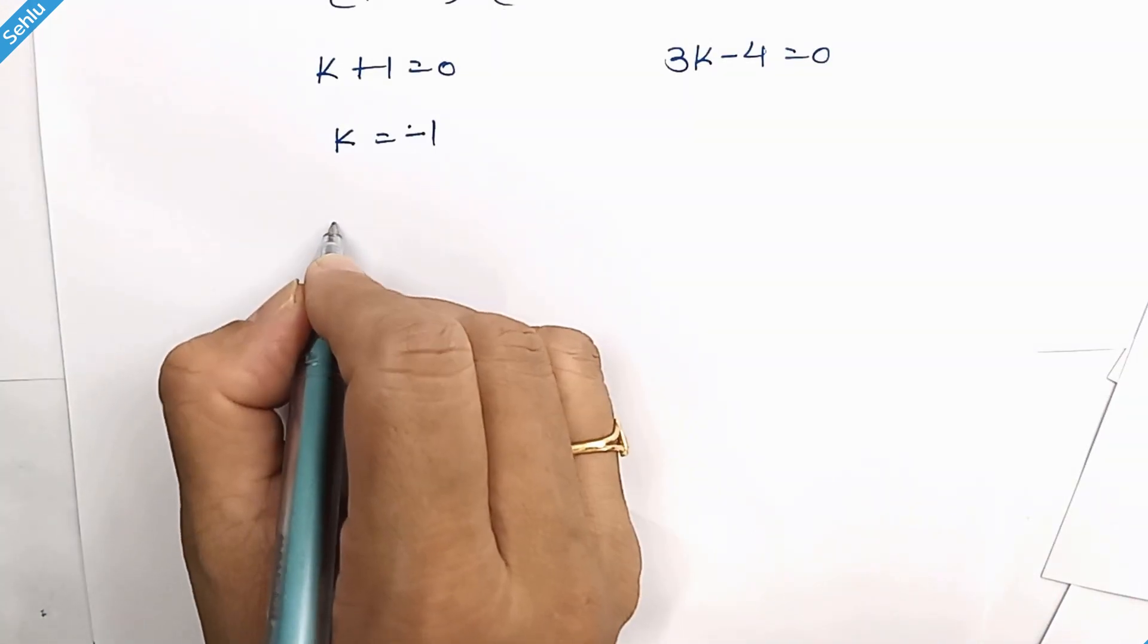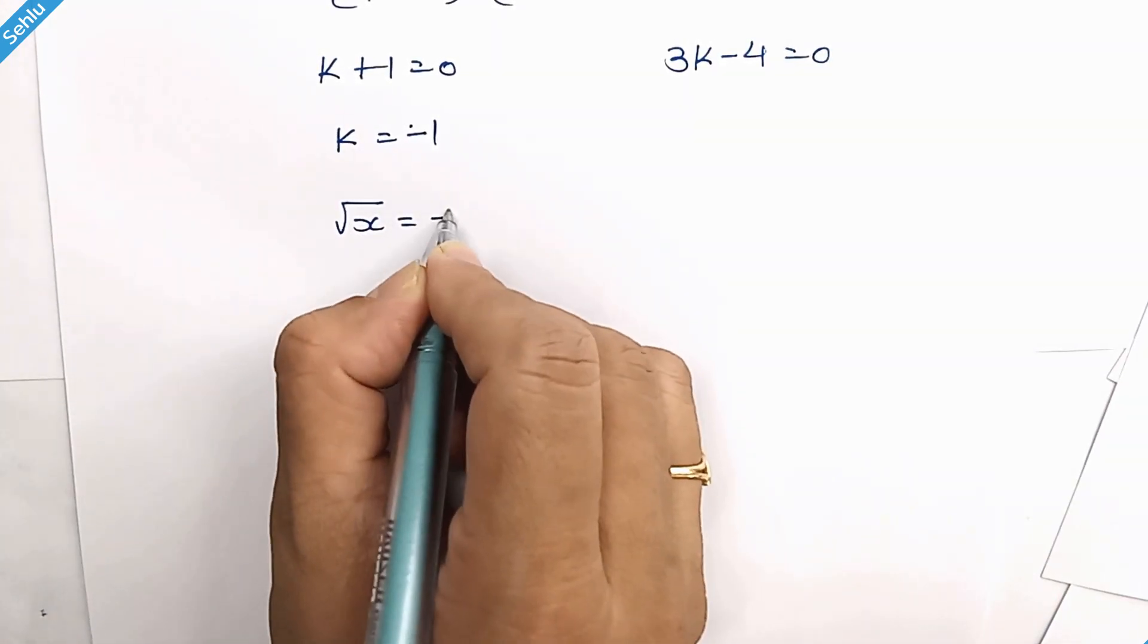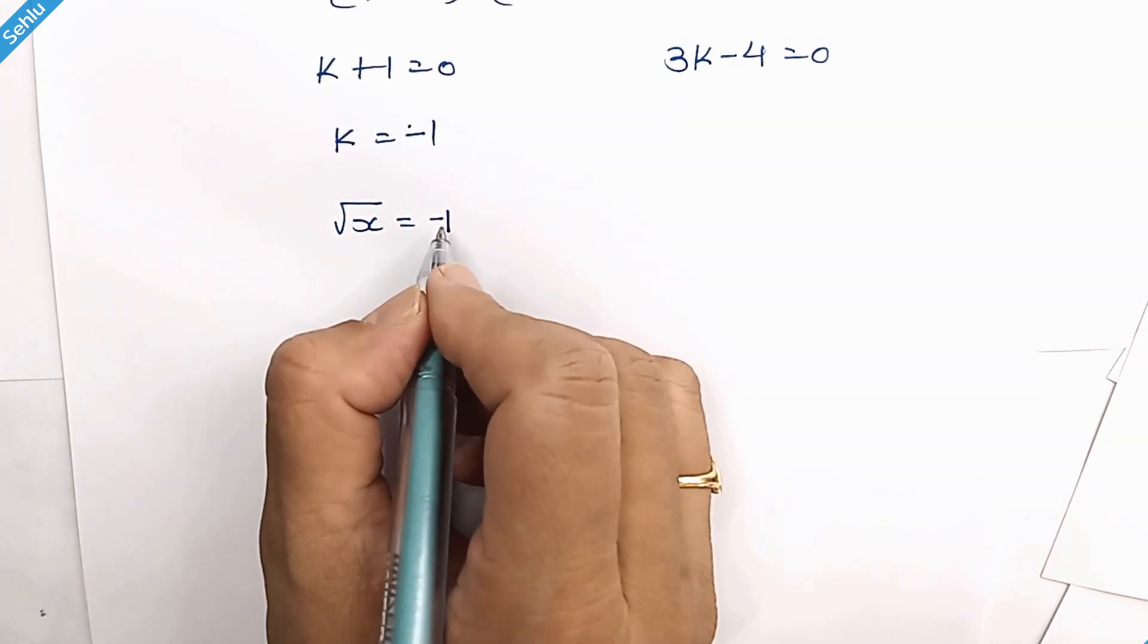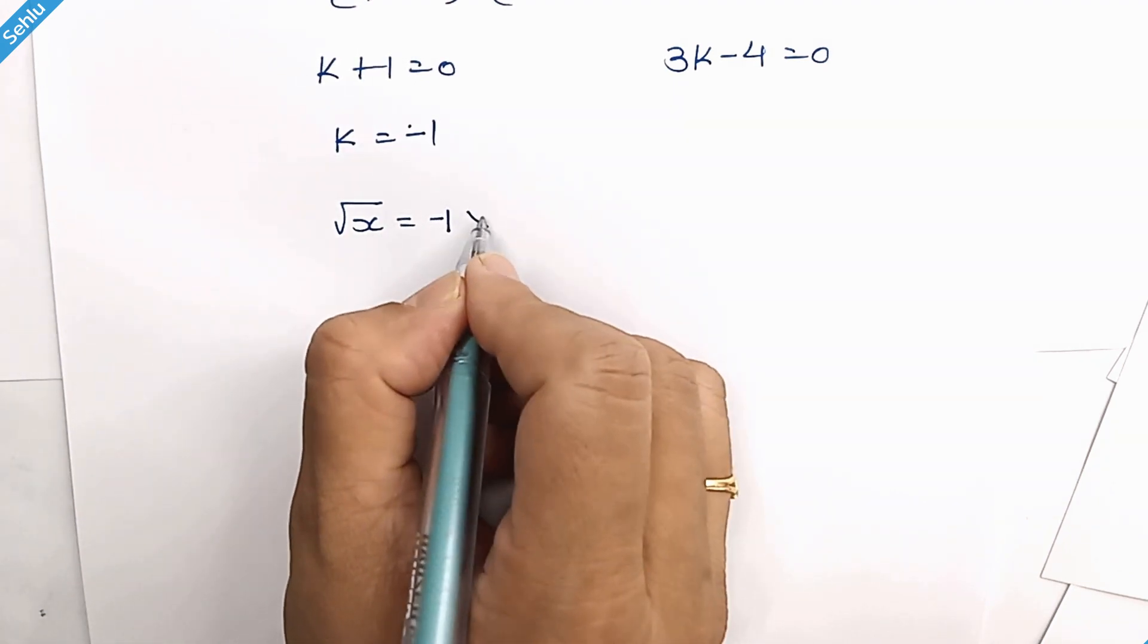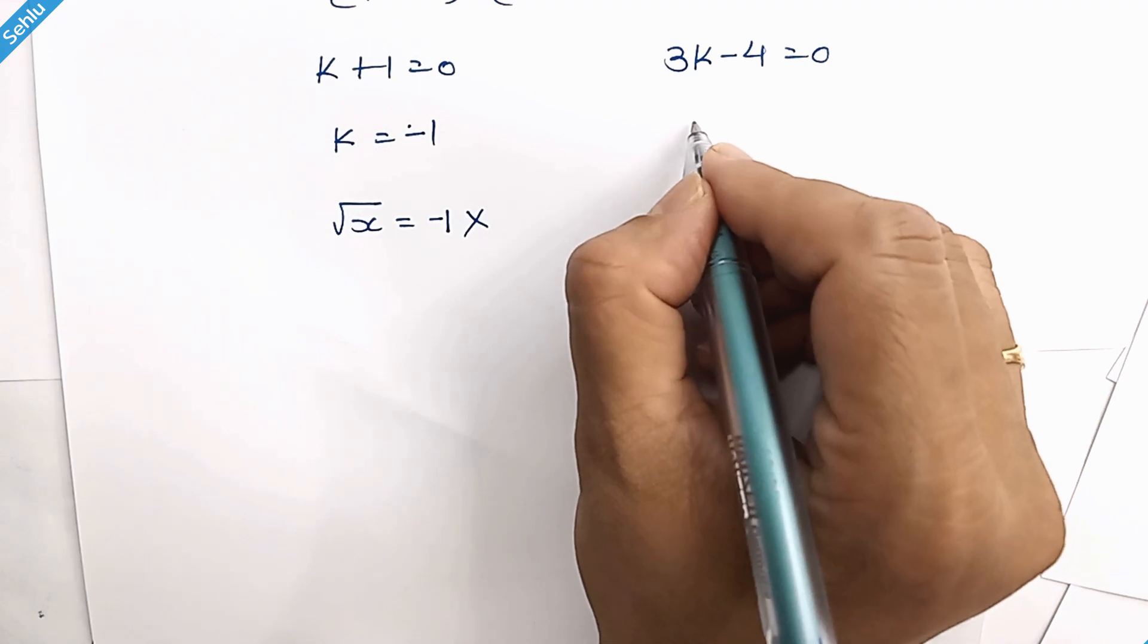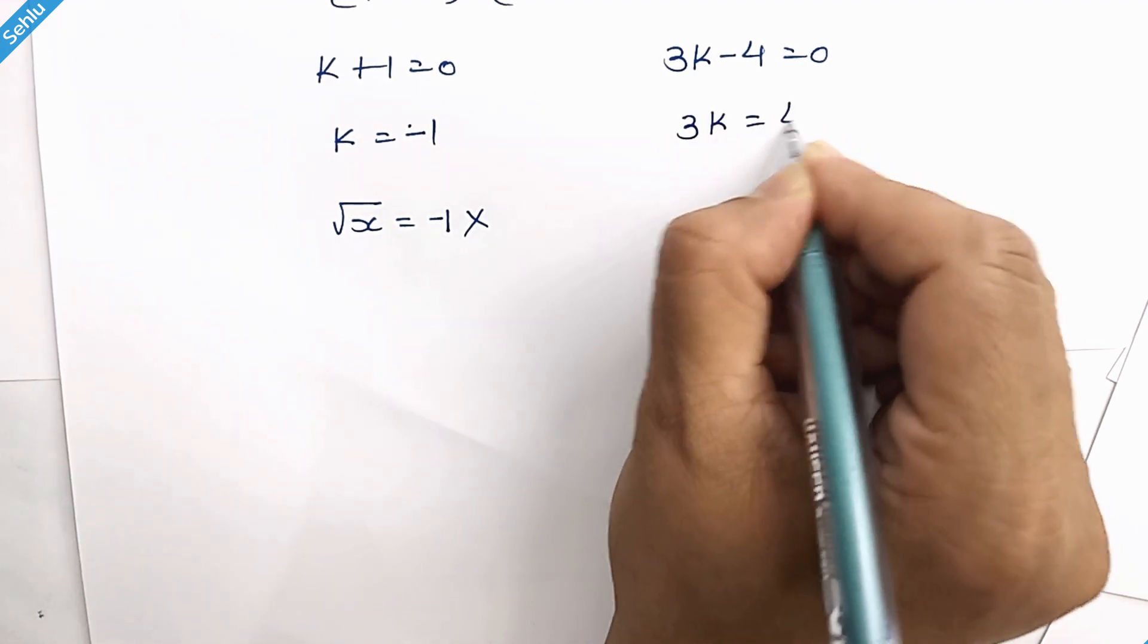Now k was taken for square root x equals negative 1. This is not possible because square root cannot be negative. So we reject k equals negative 1. And here, 3k equals 4.